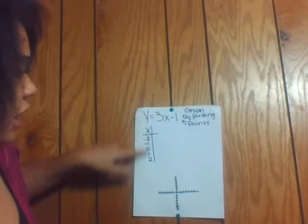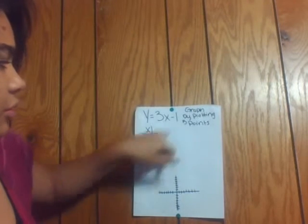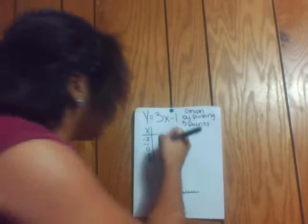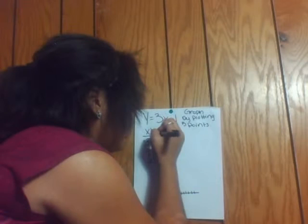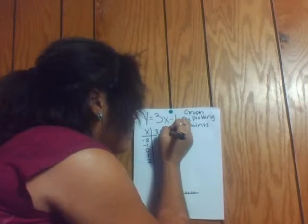Then you're going to plug your x values into your equation to figure out what y is. So you're going to have your y table. You're going to have 3x minus 1 over here.